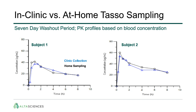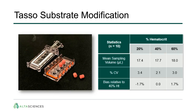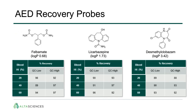Since the initial TASO investigation, engineering modifications have resulted in a cylindrical substrate geometry. Gravimetric assessment confirmed sampling volume remains unbiased by blood hematocrit, with a substrate volume of approximately 17.4 microliters. Recovery of three AED probes covering a range of log P from the cylindrical substrate was similar to that from 20-microliter Mitra when using identical impact-assisted extraction conditions.